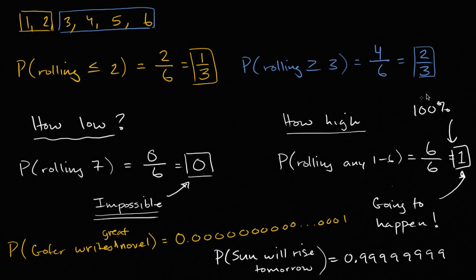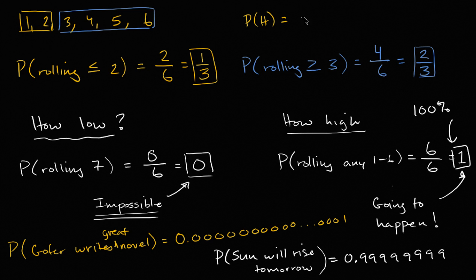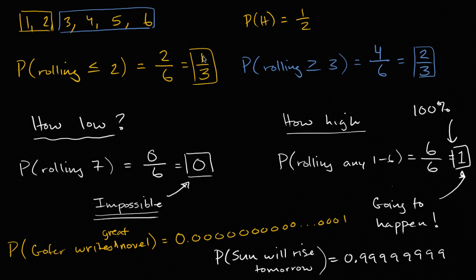The big takeaways: higher probability means more likely. The lowest probability you can get is zero, the highest is one. If your probability is one-half — like flipping a fair coin — it's equally likely to happen or not happen. Anything with a probability greater than one-half is more likely to happen than not, and anything less than one-half is less likely to happen than not.